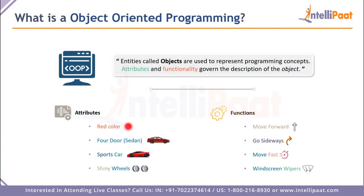With object oriented programming it's a little different, because here we are trying to understand the how rather than the what. As the name suggests, in OOP every single entity we deal with in this programming paradigm is basically an object. Each of these objects will have attributes and functionalities that give you a description of what the object is and what it does. Let's consider a simple example of a car.